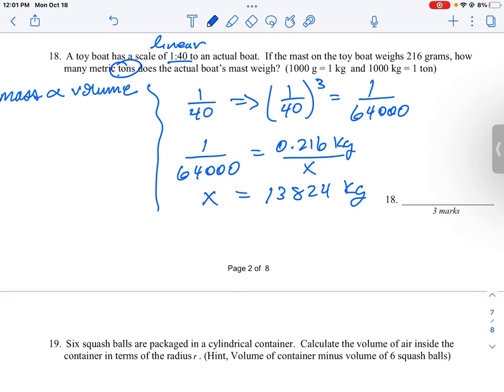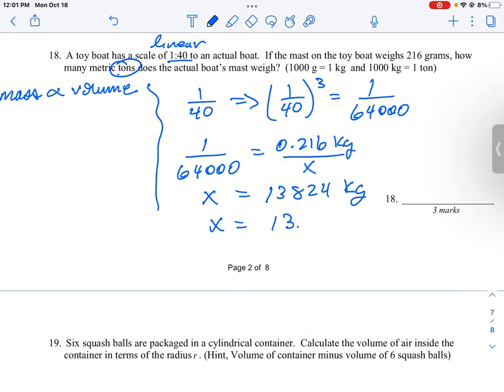this into tons because that's a better unit. So 1 ton is equal to 1,000 kilograms, so x we just divide by a thousand, so it's going to be 13.824 tons is the actual mass. So this question is